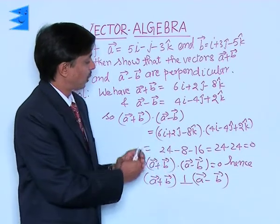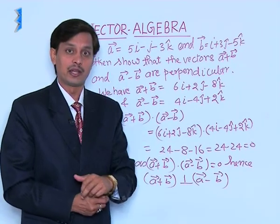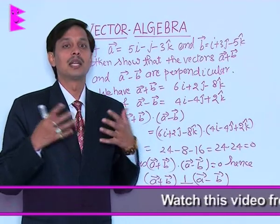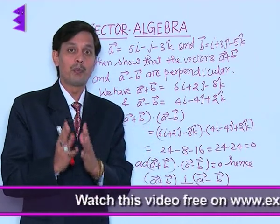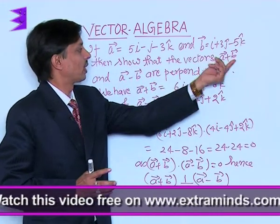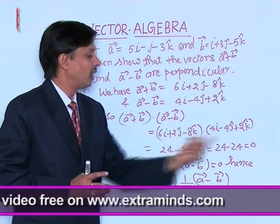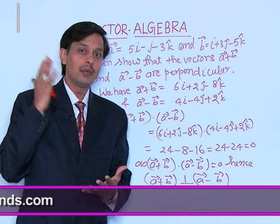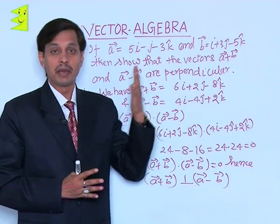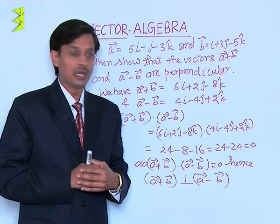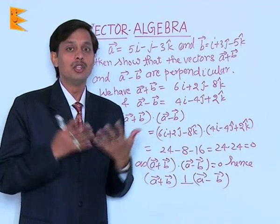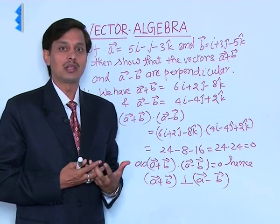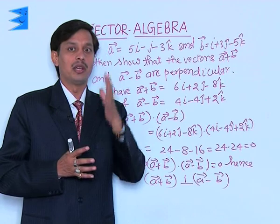We notice that the dot product of the resulting vectors A plus B and A minus B equals zero. Therefore, we conclude that vector A plus B and vector A minus B are perpendicular to each other. This is because the dot product formula gives vector X · vector Y equals |X||Y|cos(θ), and a result of zero means cos(θ) = 0, confirming perpendicularity. Whenever you want to show two vectors are perpendicular, you just need to show their dot product is zero.